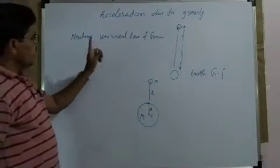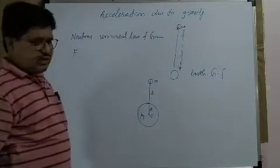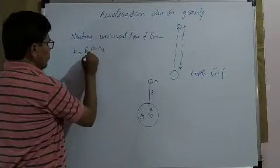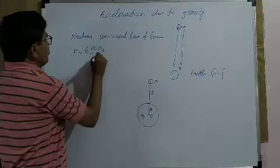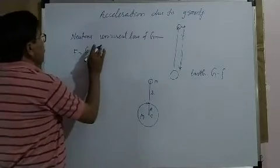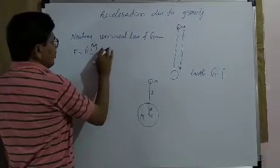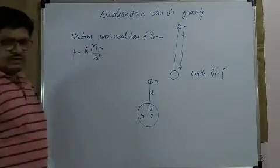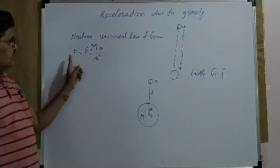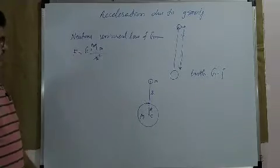According to Newton's universal law of gravitation, the force of attraction between two objects is directly proportional to the product of their masses. Where G is the universal gravitational constant, in place of M1 you can take the mass of the earth, in place of M2 you can take the mass of that object, and r is the distance between their centers. That is nothing but Newton's universal law of gravitation.